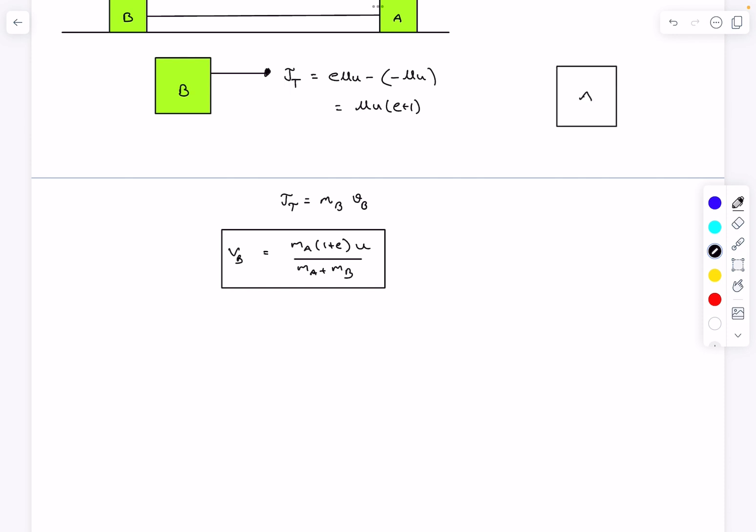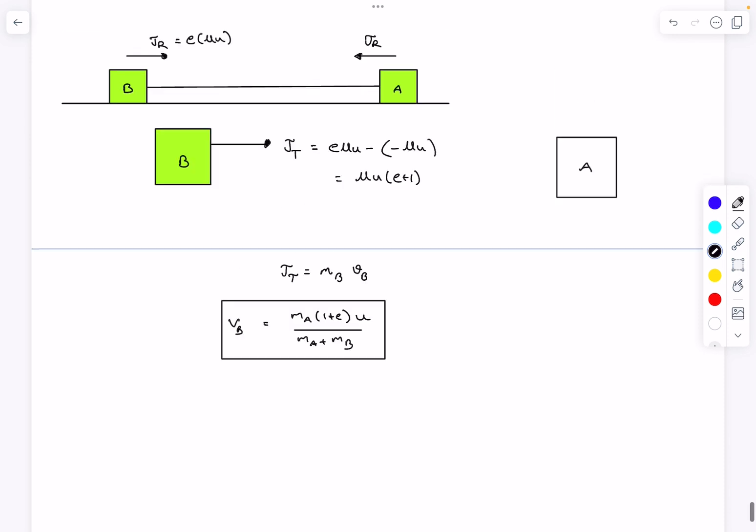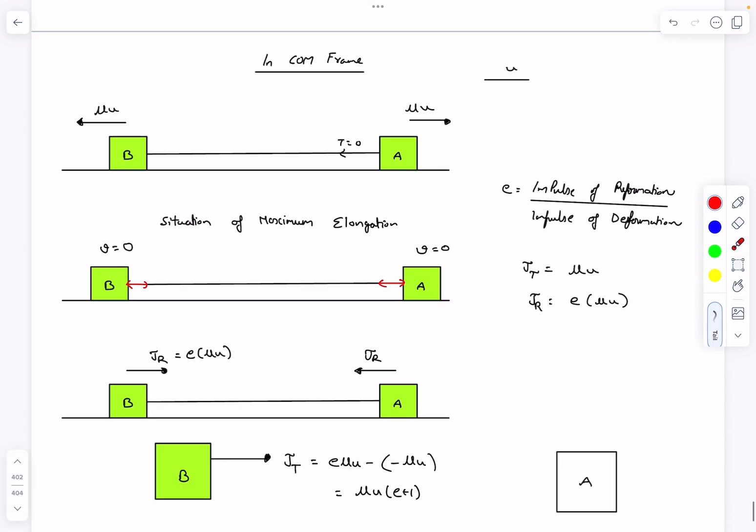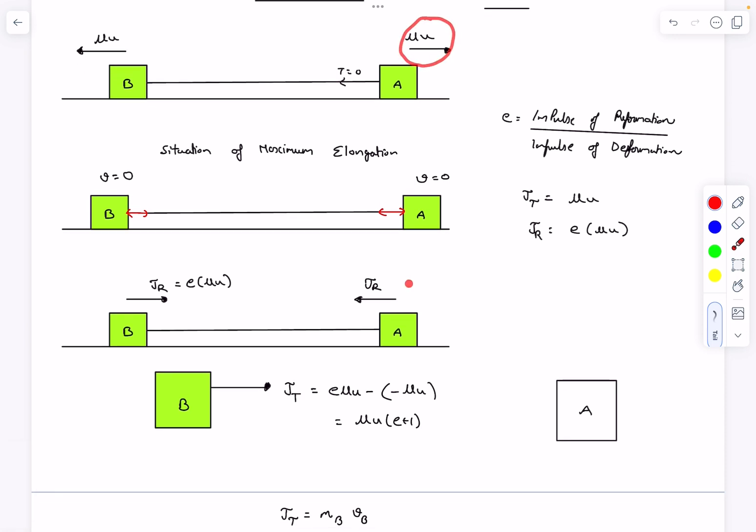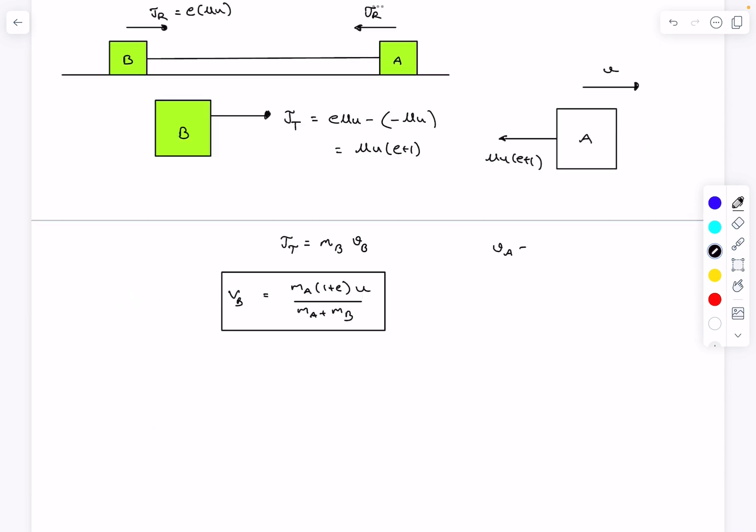Let's also calculate the final velocity of block a. In block a, the total impulse as you can see is mu u towards the right initially, and finally it is e mu u towards the left. So the net impulse that acts on block a is also exactly the same - its magnitude is mu u times (e + 1) towards the left. But in the ground frame, a itself had a velocity of u initially. So we can write the final velocity of block a as the initial velocity minus the total impulse, which is mu u into (e + 1) divided by mass of a.